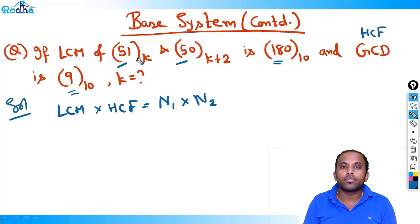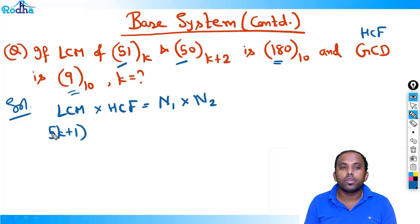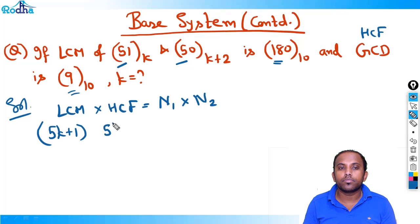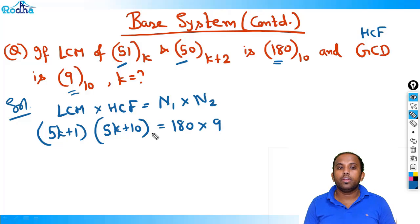Now LCM is 51 in base K. Change everything to base 10. So 51 in base K becomes 5K+1, and 15 in base K+2 becomes 5(K+2)+1 = 5K+11. Wait — 50 in base K+2 becomes 5K+10. And this equals 180 × 9 in base 10.